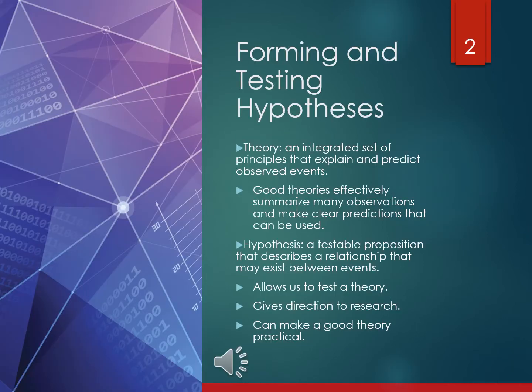A theory comes after we've done the research and predicted and observed different events. Theories allow us to make clear predictions. We do this through the use of a hypothesis — something that's testable, something that describes the relationship between different events. It allows us to test the theory we're trying to prove, gives us direction in the research, and hopefully can make that theory practical.